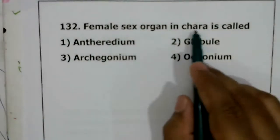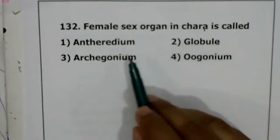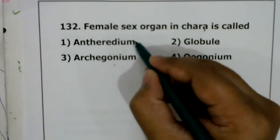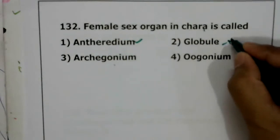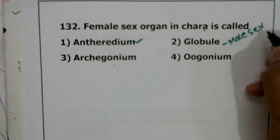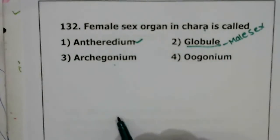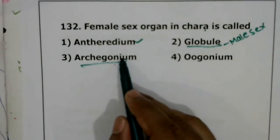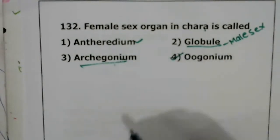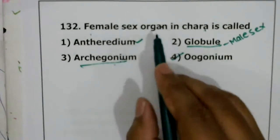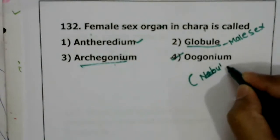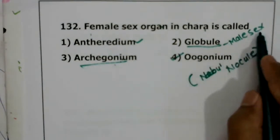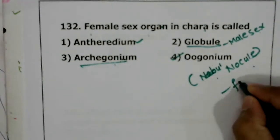Question 131: female sex organ in Chara is called? Antheridium is the male sex organ in bryophytes and algae. Globule is the male sex organ in Chara. Archegonium is the sex organ in bryophytes. Oogonium (eugonium/nucule) is the female sex organ in Chara. Another name for oogonium in Chara is nucule. So globule is male and nucule is female in Chara.